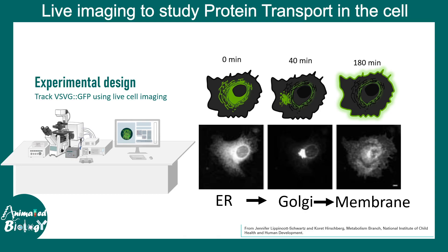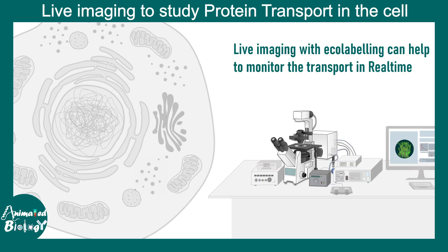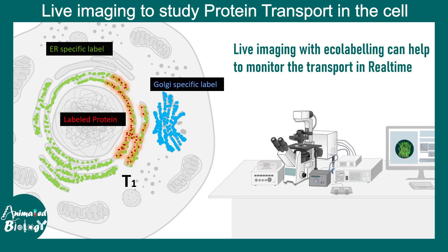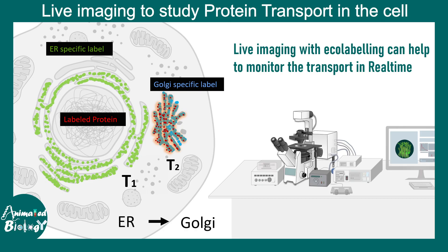There are other ways people track intracellular movement today. In live cell imaging, researchers simultaneously label organelles with dyes or organelle-specific proteins. For example, the ER can be labeled with a GFP-tagged ER-resident protein in green, the Golgi labeled in blue, and the protein of interest tagged with TdTomato in red. One can then track whether the red protein co-localizes with the ER or Golgi at time point T1, and what happens at T2. In this example, at T1 the protein is in the ER, and at T2 it has moved to the Golgi. Live cell imaging and microscopy are therefore very useful tools for tracking all these intracellular movements.